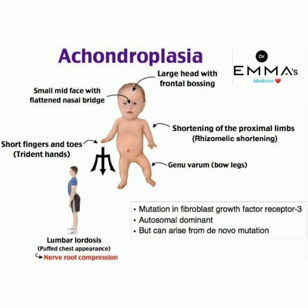Achondroplasia occurs due to a mutation in fibroblast growth factor receptor 3 (FGFR3). It is an autosomal dominant condition but can also arise from a de novo mutation.